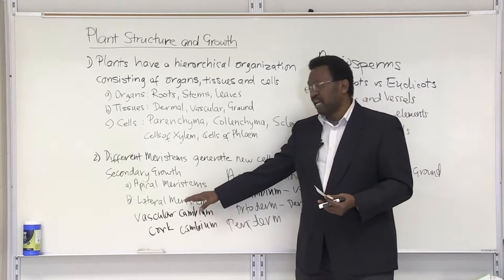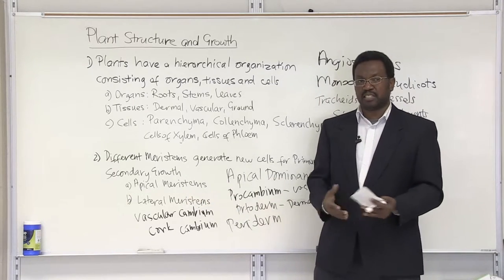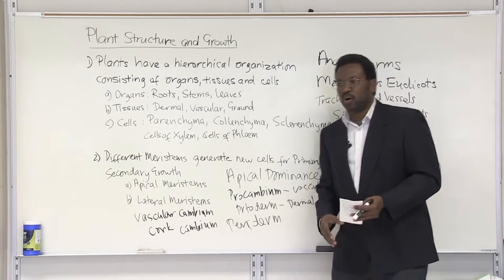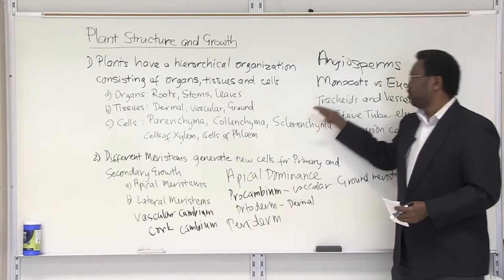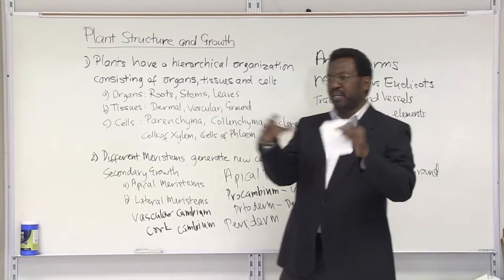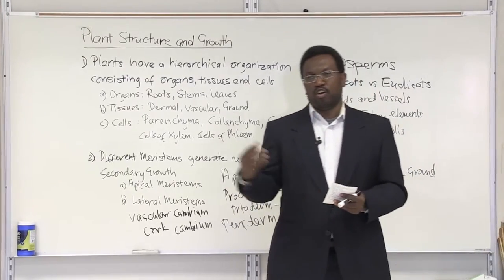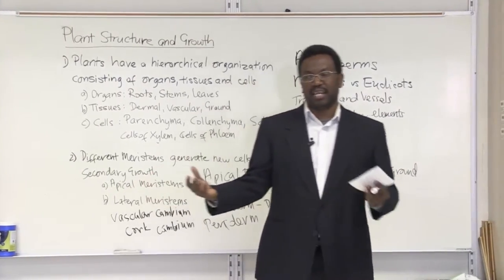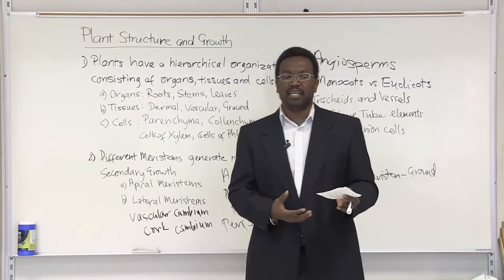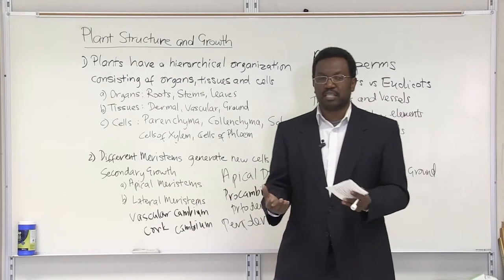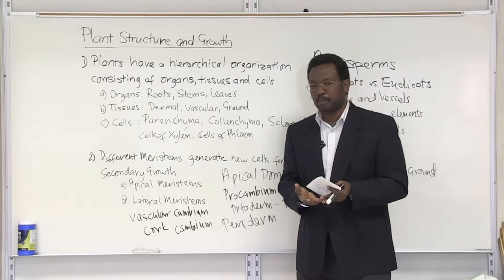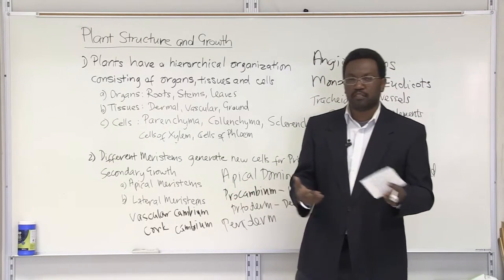So lateral meristems give rise to secondary growth, while apical meristems drive primary growth. As we talk about organization, I'll mention monocots versus dicots, and I'd like to bring this to a close by looking at organization on a cellular level. In lab, you're going to take a microscopic view of monocot root, stems, and leaves versus dicot root, stems, and leaves, and the organization surrounding the vascular tissue associated with monocots versus dicots.